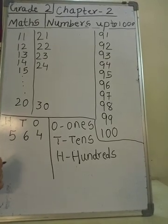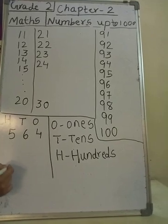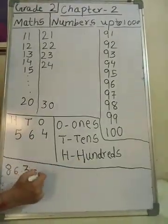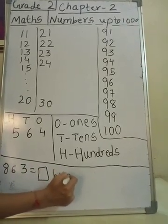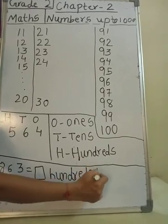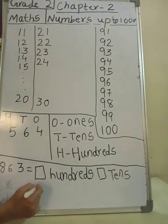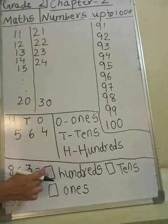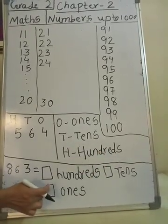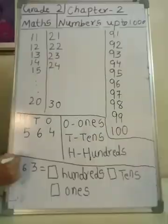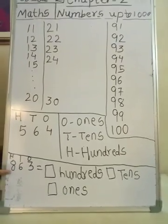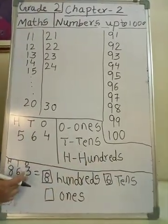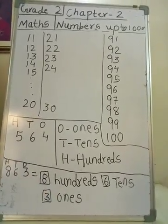Suppose we have to write a number in regard to its place. I am giving you one number here: 8, 6, 3. You have to write in the box which number is at 100's place, which number is at 10's place, and which number is at 1's place. We will write H, T, O. Which number is at 100's place? 8. Which number is at 10's place? T for 10's — 6. And which number is at 1's place? O for 1's — 3.